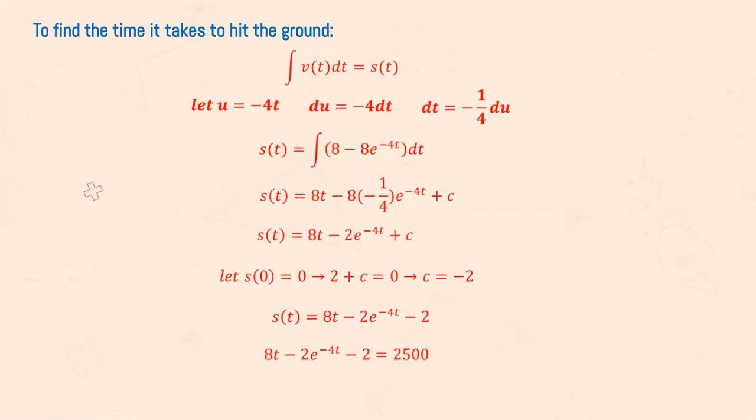Solving for c by equating t equals 0, we get c is equal to negative 2. So the position function is 8t minus 2e raised to negative 4t minus 2.